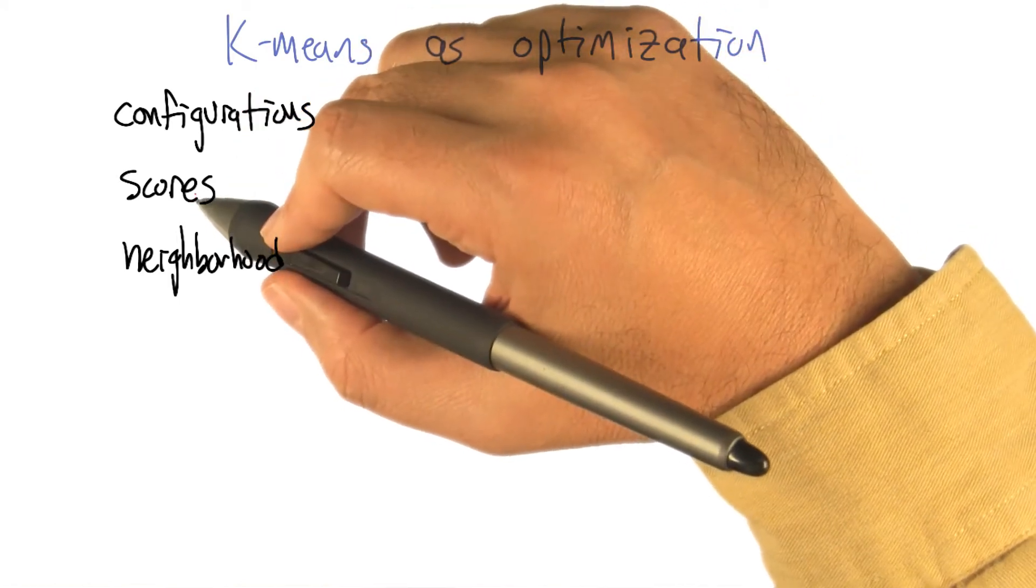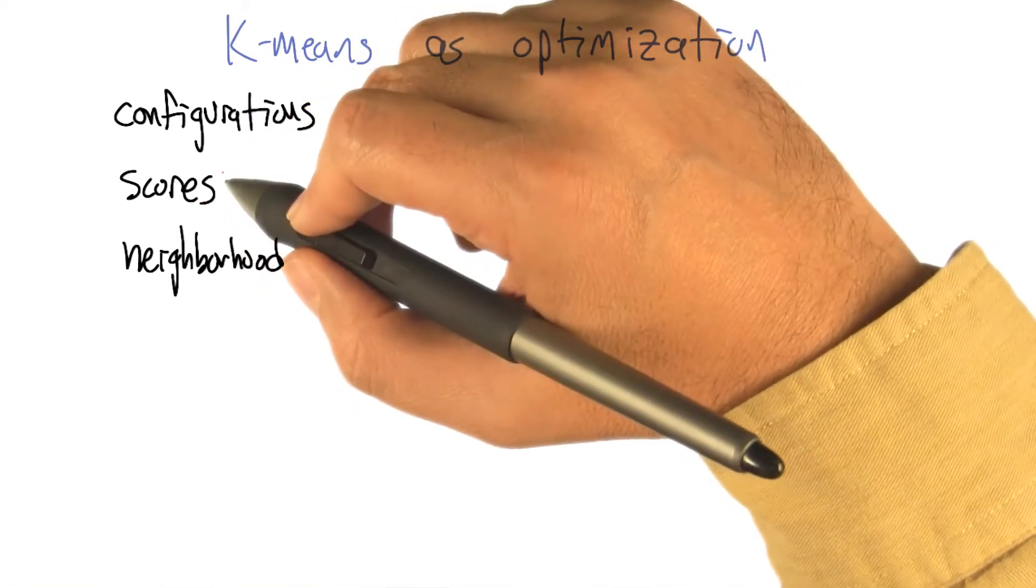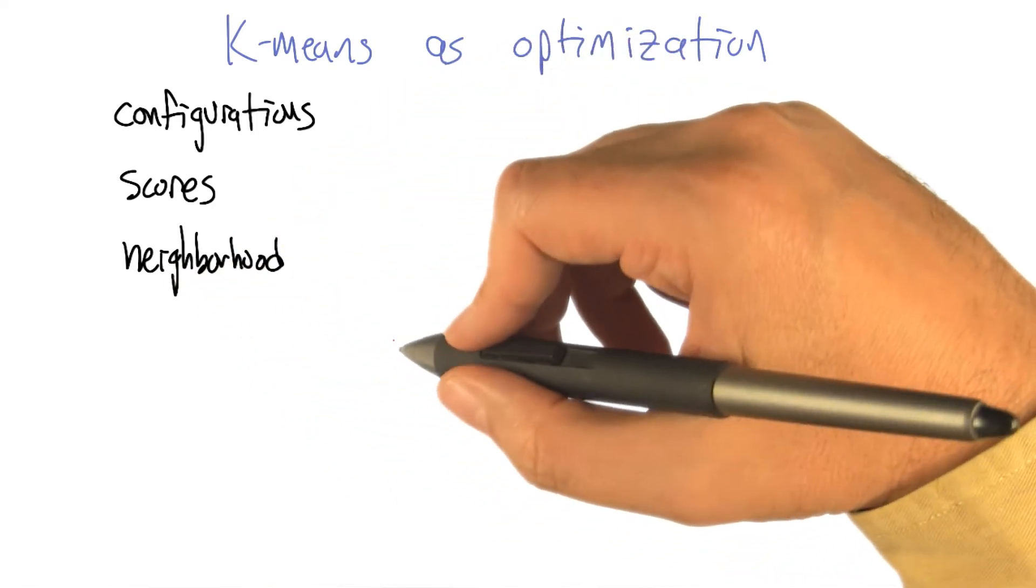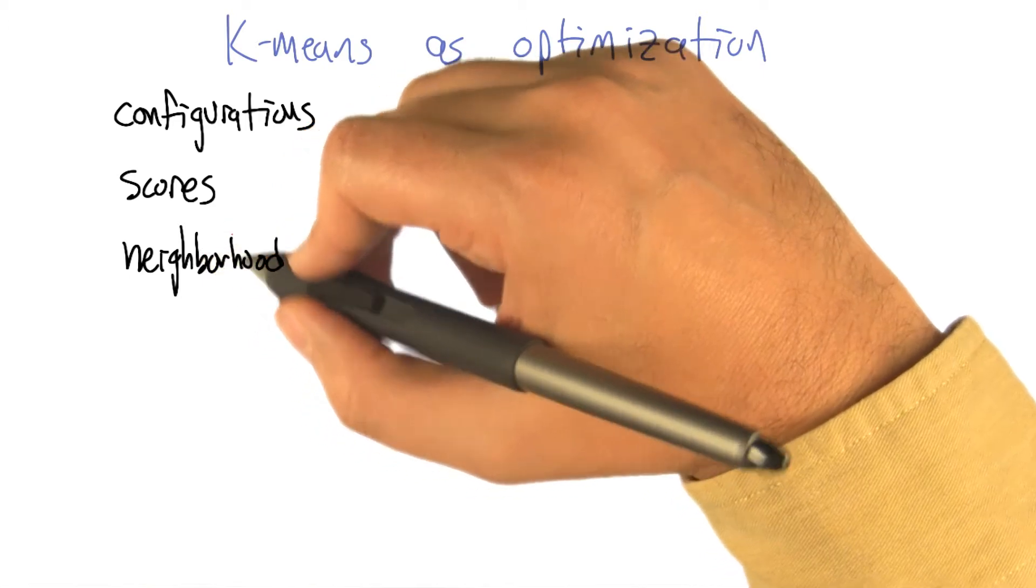There was a way of scoring configurations, and we were trying to find configurations that had high score. And for some of the algorithms, we needed a notion of a neighborhood so that we could move from configuration to configuration trying to improve.